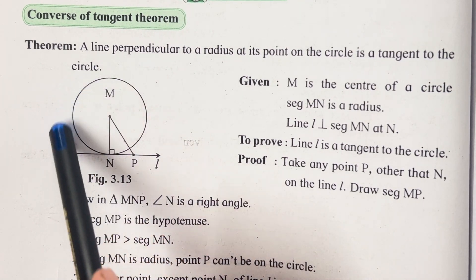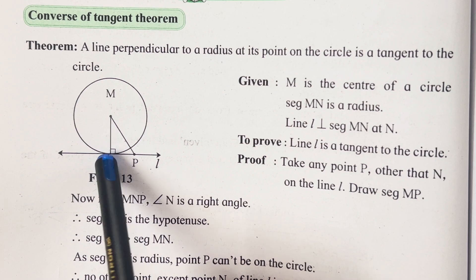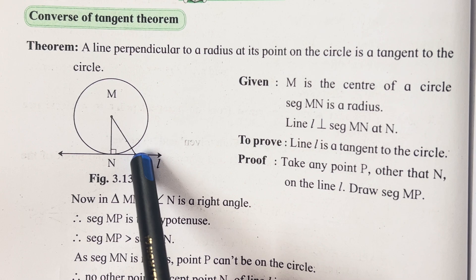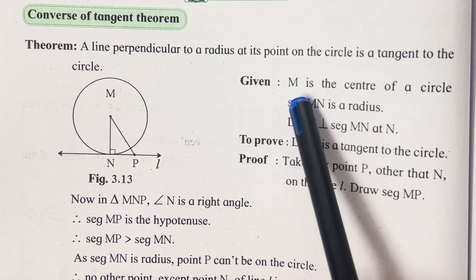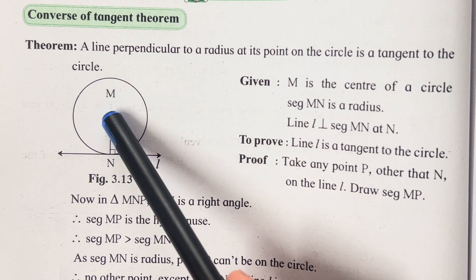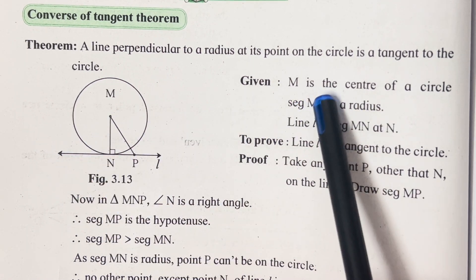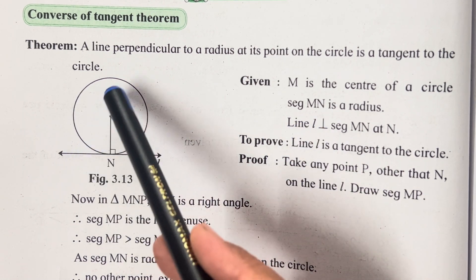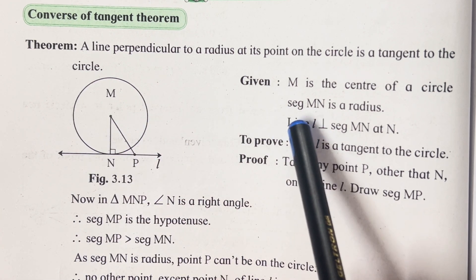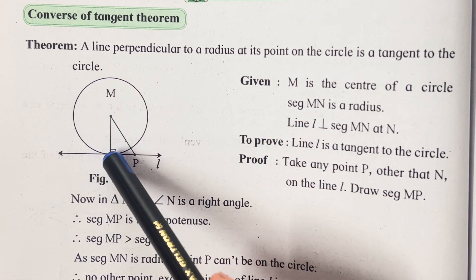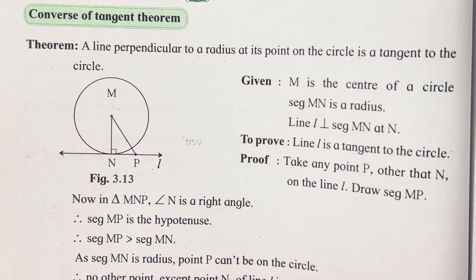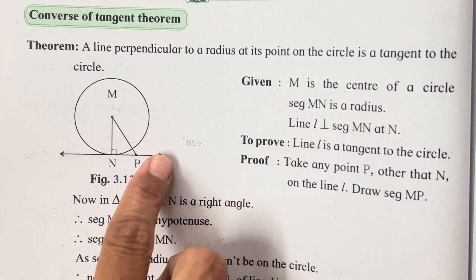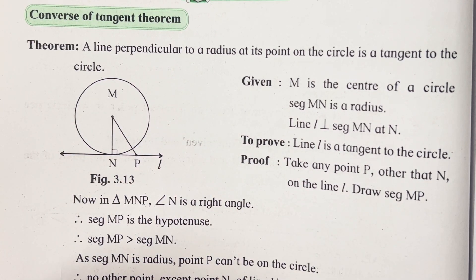Now, what has been given? In the diagram, M is the center of the circle, segment MN is the radius, and line l is supposed to be the tangent — this is the extended line that we have to show. Line l is perpendicular to MN at point N, therefore it is forming a 90-degree angle. We have to prove that line l is a tangent to the circle.